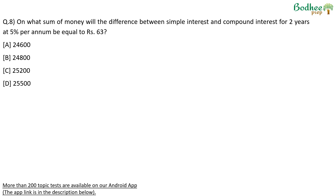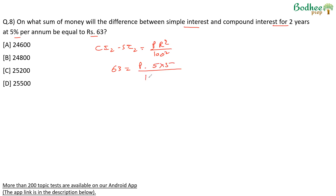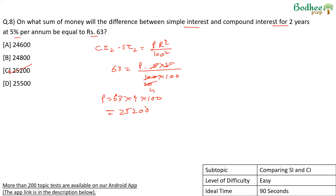Question eight: on what sum of money is the difference between simple interest and compound interest for 2 years at 5% equal to 63? The difference between CI and SI for 2 years is given directly by P × R² ÷ 100². So 63 = P × 25 ÷ 10,000. Cross-multiplying, P = 63 × 4 × 100 = 25,200. Direct application of a formula, so an easy question. Solving time will not be very high — not more than 90 seconds. Certainly a doable question.